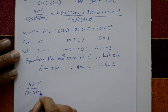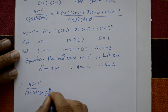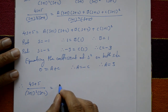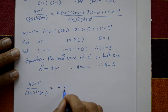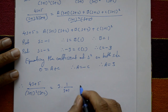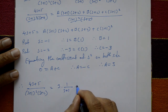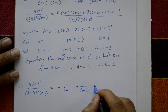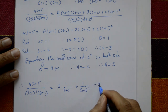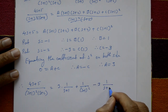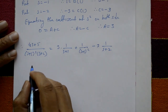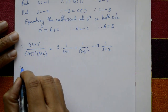Using these values A = 3, B = 1, C = -3 in the partial fraction, we get: (4s + 5) upon (s + 1) whole square into (s + 2) equals 3 times (1 upon s + 1) plus 1 times (1 upon (s + 1) whole square) minus 3 times (1 upon s + 2). Now take the inverse Laplace transform on both sides.